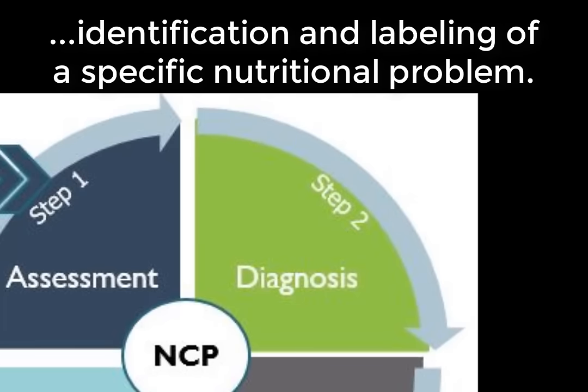The D in ABCD is Dietary — food and nutrition-related history. Step two is nutritional diagnosis: the identification and labeling of a specific nutritional problem. Nutrition and dietetic professionals use standardized nutrition diagnosis terminology, and in this class you will be limited to using only that terminology. These diagnoses are organized in the electronic Nutrition Care Process and Terminology manual, which you will need access to.